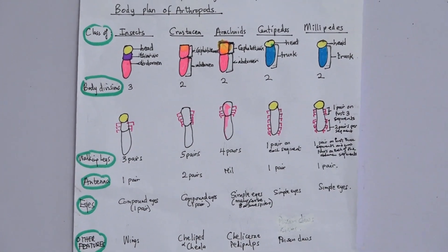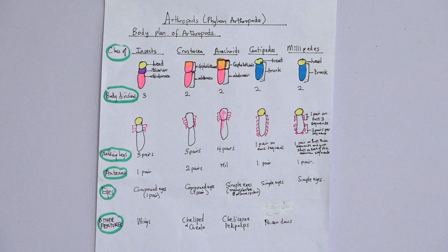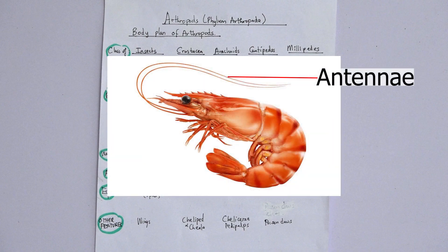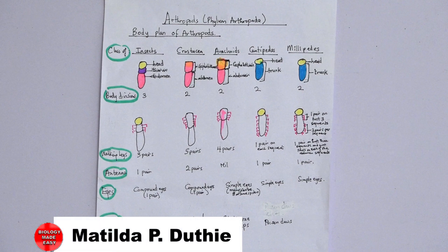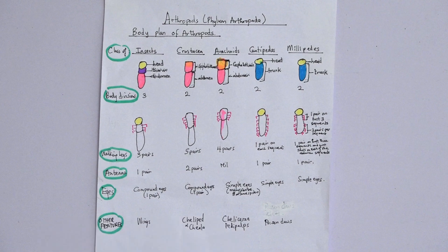Now looking at antennae: insects have one pair of antennae. Crustaceans have two pairs — one pair of long antennae and one pair of short antennae. Arachnids have no antennae. Centipedes and millipedes each have one pair of antennae.